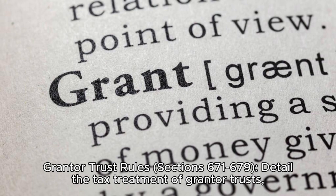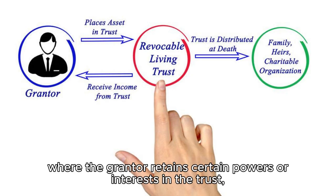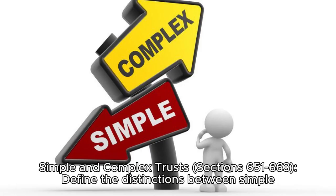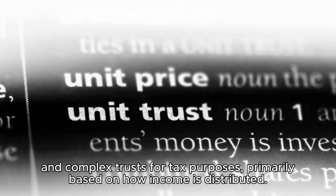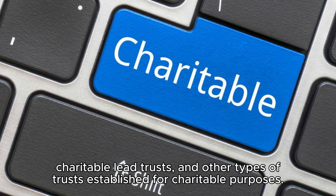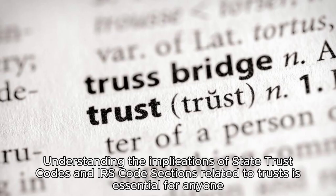Grantor trust rules: Sections 671 to 679 detail the tax treatment of grantor trusts, where the grantor retains certain powers or interests in the trust, and thus the trust's income is treated as the grantor's income for tax purposes. Simple and complex trusts: Sections 651 to 663 define the distinctions between simple and complex trusts for tax purposes, primarily based on how income is distributed. Charitable trusts: Sections 664 to 668 provide rules for the taxation of charitable remainder trusts, charitable lead trusts, and other types of trusts established for charitable purposes.